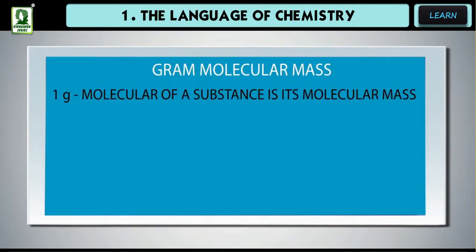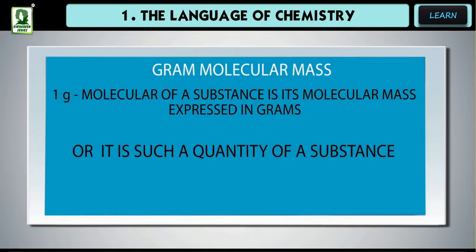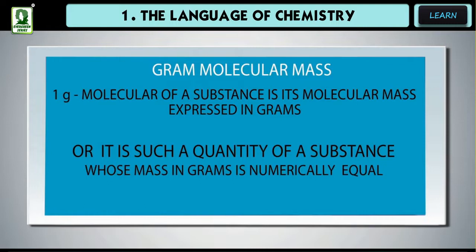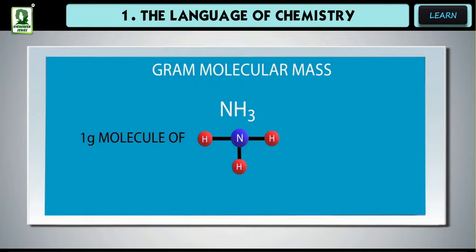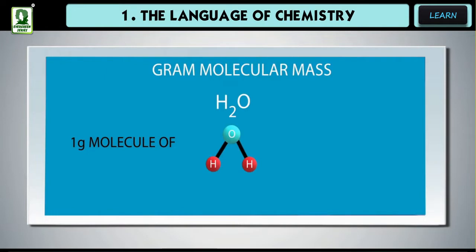1 gram molecule of a substance is its molecular mass expressed in grams or it is such a quantity of a substance whose mass in grams is numerically equal to its molecular mass expressed in amu. Example, 1 gram molecule of NH3 has mass 17 grams. 1 gram molecule of H2O has mass equals 18 grams.